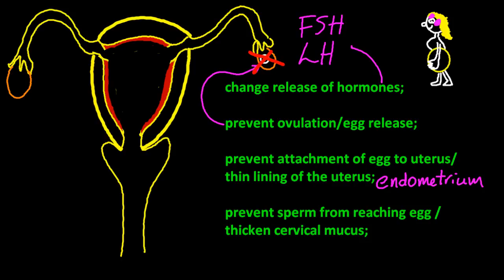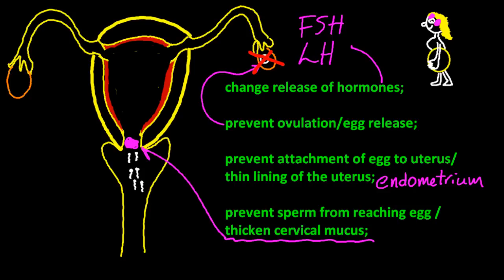For the fourth point: prevent sperm from reaching the egg. How does that happen? You could say thickened cervical mucus. Either of those two ideas will get you the final point.